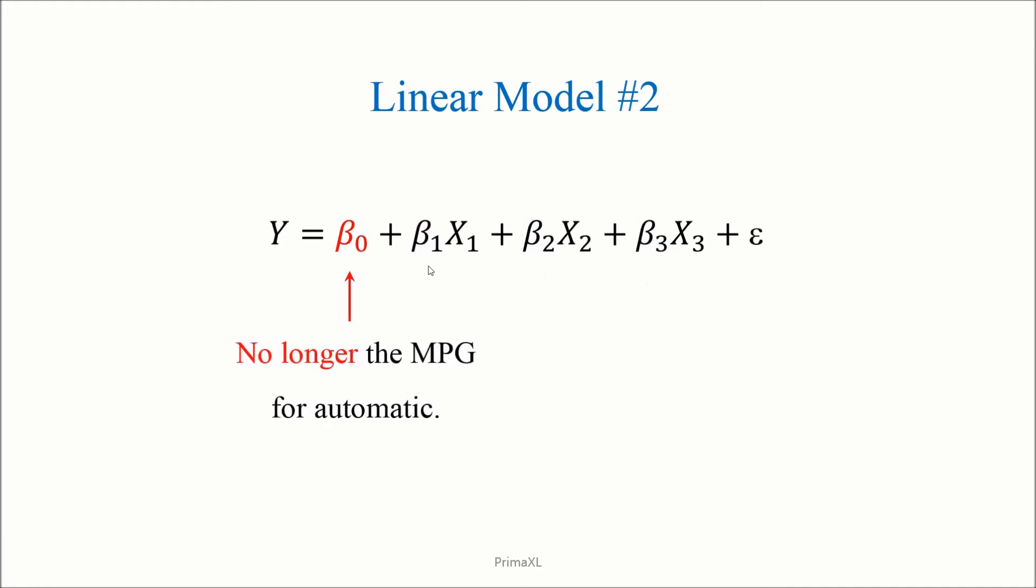However, unlike before, the intercept or beta0 cannot be interpreted as the baseline MPG for the automatic transmission. This is so because we have more terms now. Let's go back to the Excel spreadsheet and fit the model coefficients.